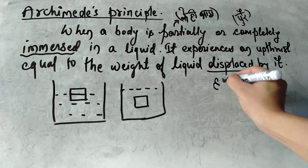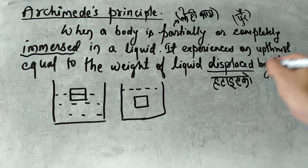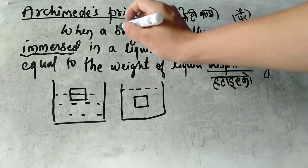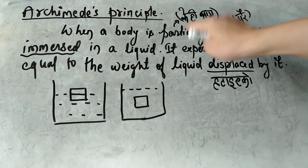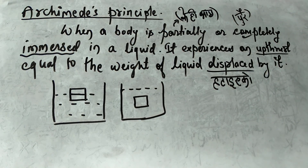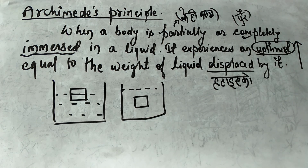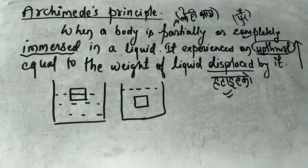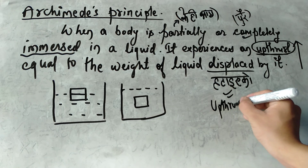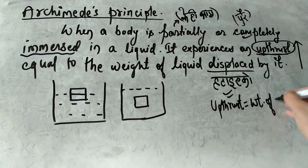Displaced means — when you have an object and you have liquid, the object takes up space in that liquid. The upthrust is equal to the weight of the liquid displaced.